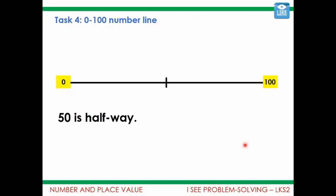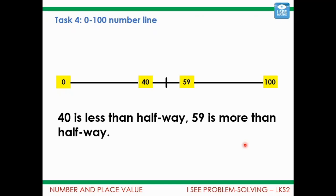So my thinking would go something like this. I'd perhaps put 50 in as half way and that's often helpful. Then I'd think well 40 is less than half way and 59 is more than half way and the gap is almost the same between those two.